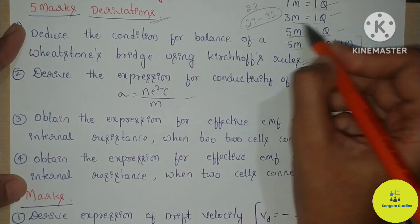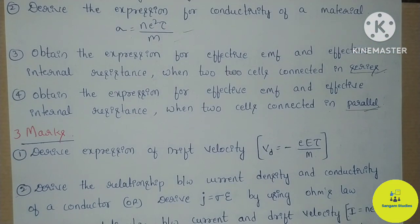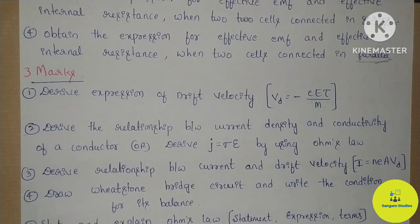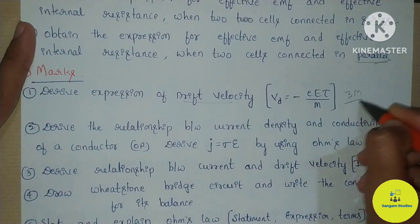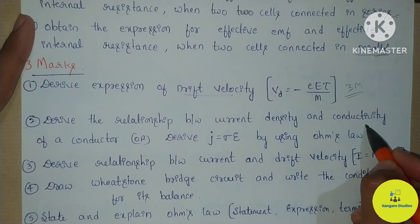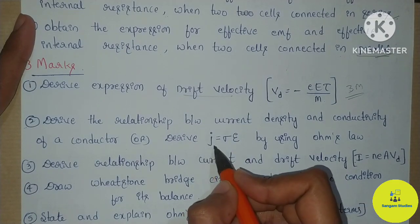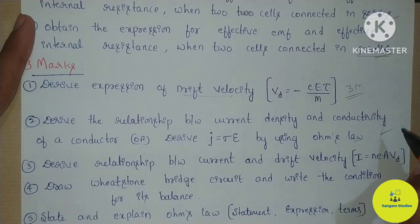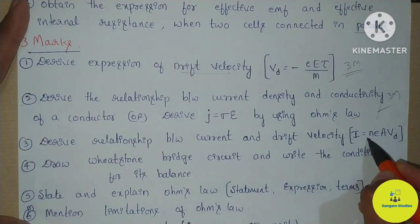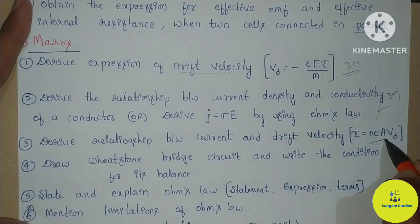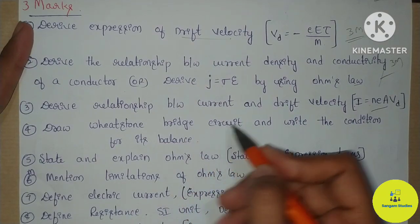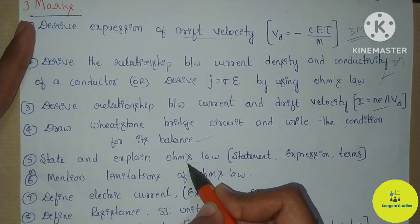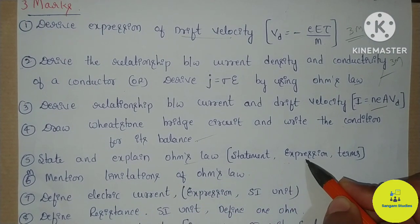For 3-mark questions, one chance involves the term eτ/m. Derive the relationship between current density and conductivity of a conductor. Another derivation using Ohm's law: derive the relationship between current and drift velocity, that is I = nAvd — this is a 3-mark chance. Also, draw the Wheatstone bridge circuit and write the condition for its balance. State Ohm's law — you can write a statement, an expression, and the terms.